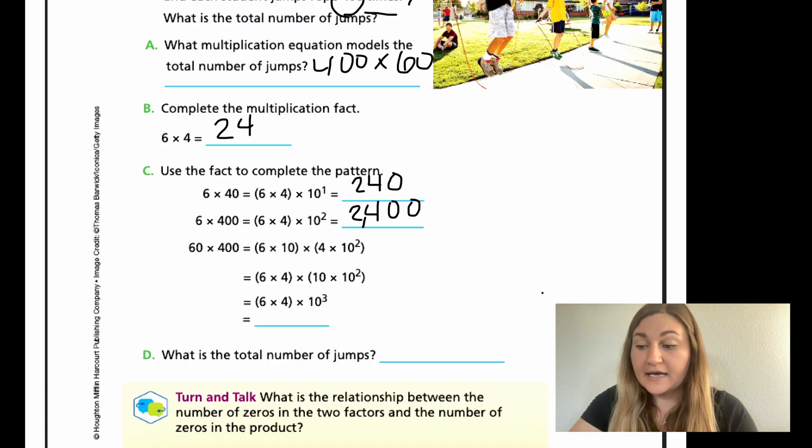Now I'm going to add the power of 10 to my 6, making it the true problem. 60 times 400. I'm still going to separate my 6 and my 4, but now my 6 has a power of 10. So 6 times 10, or 10 to the 1st, times 4 times 10 to the 2nd, because there's two 0s.